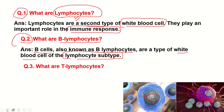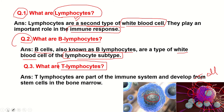What are T lymphocytes? T lymphocytes, also known as T cells, are part of the immune system and develop from stem cells in the bone marrow.